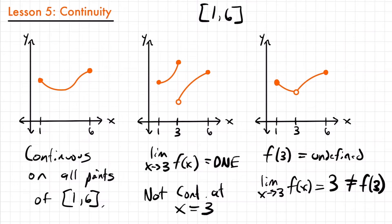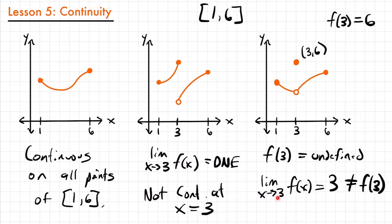What if we did have a value at x equals three? What if it was defined — say at y equals six, making the point (3, 6)? Is our function continuous now? Not quite. Even though three is now defined, the limit as x approaches three is still different from the actual value at x equals three. Now f(3) equals six, but six is not the same as three, which is our limit. So we still have an interruption — the function appears to head toward one y value but jumps to another. The function is not continuous at x equals three.